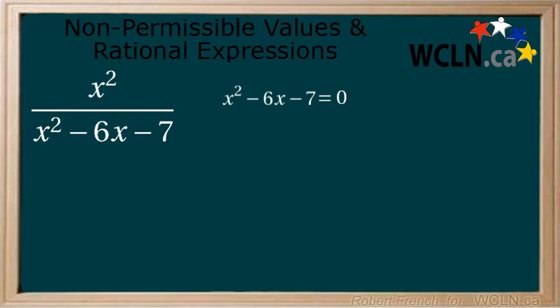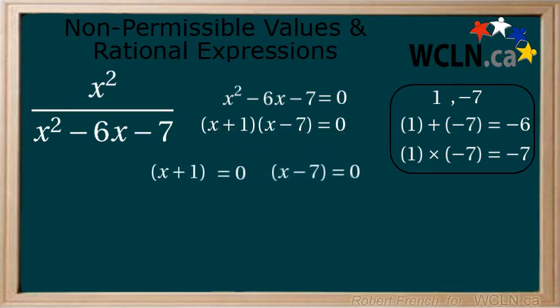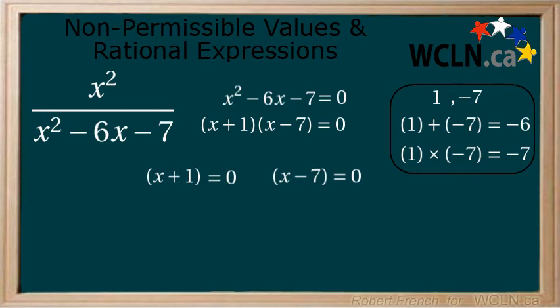x squared minus 6x minus 7: positive 1 and negative 7 add to negative 6 and multiply to negative 7. Therefore, this factors to x plus 1 multiplied by x minus 7. Now we solve each set of brackets for x, starting with x plus 1 equals 0 and x minus 7 equals 0. We get x equals negative 1 and x equals 7.